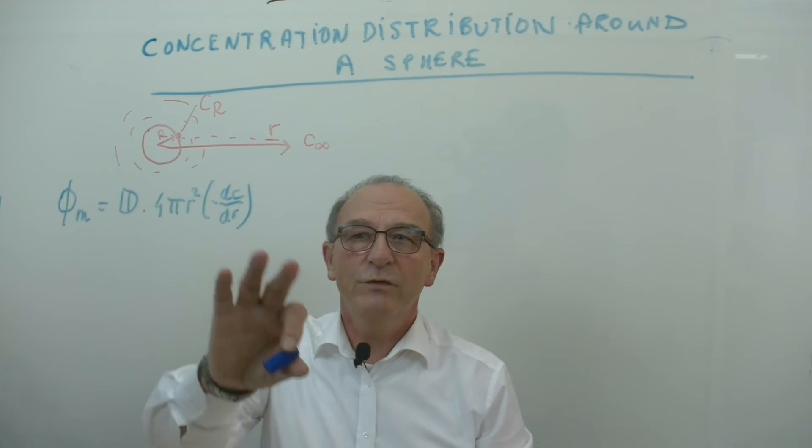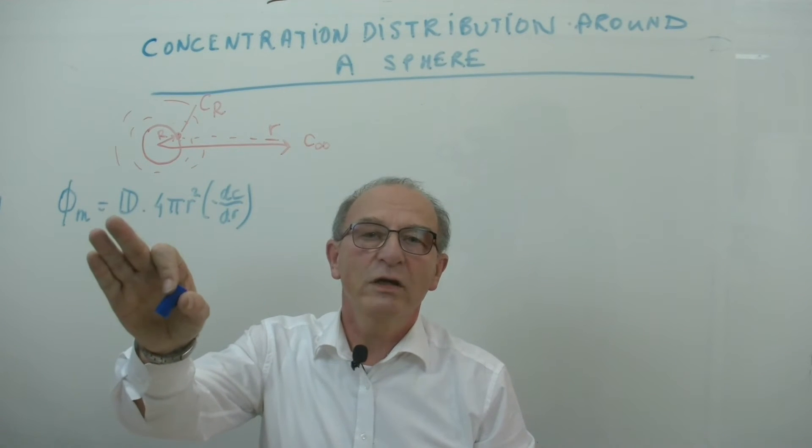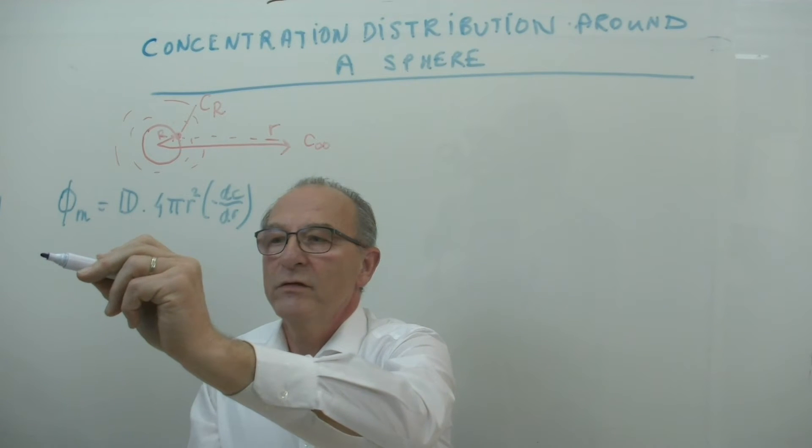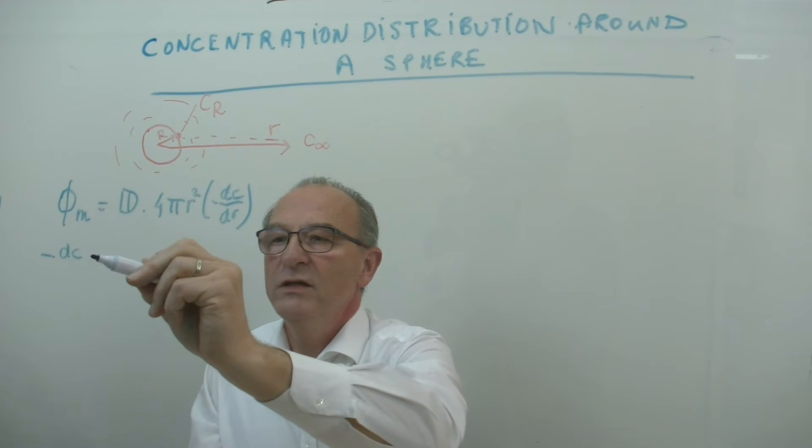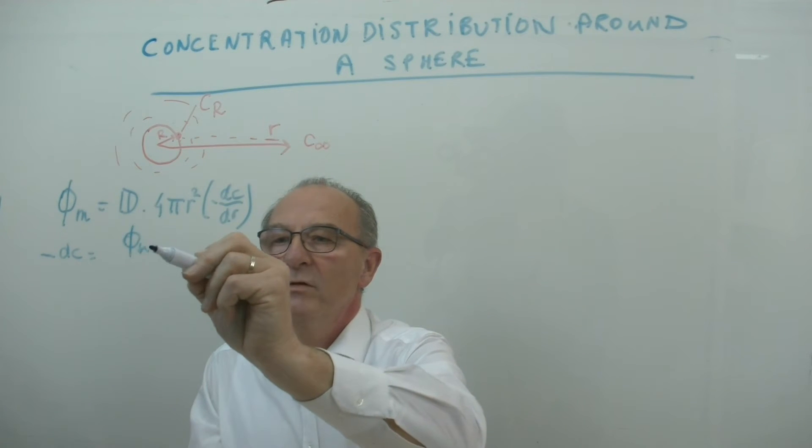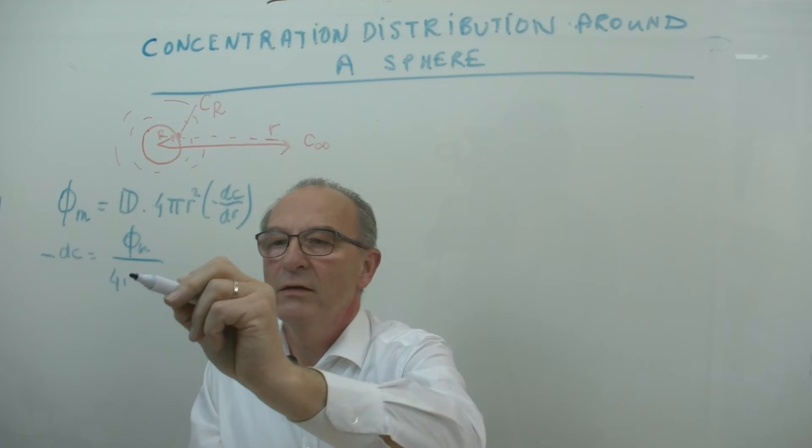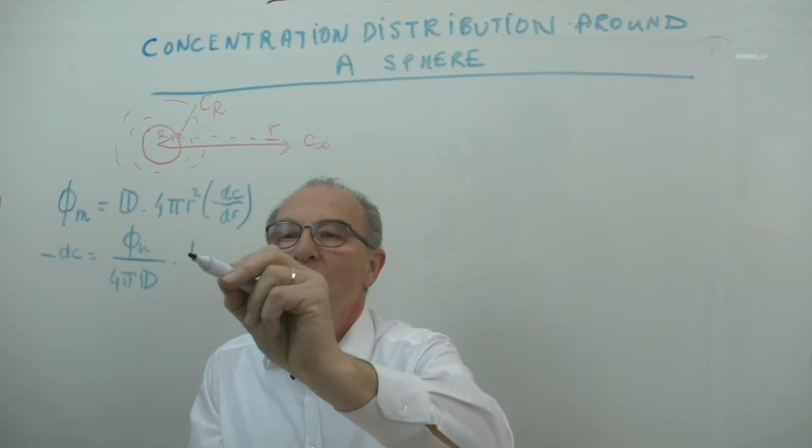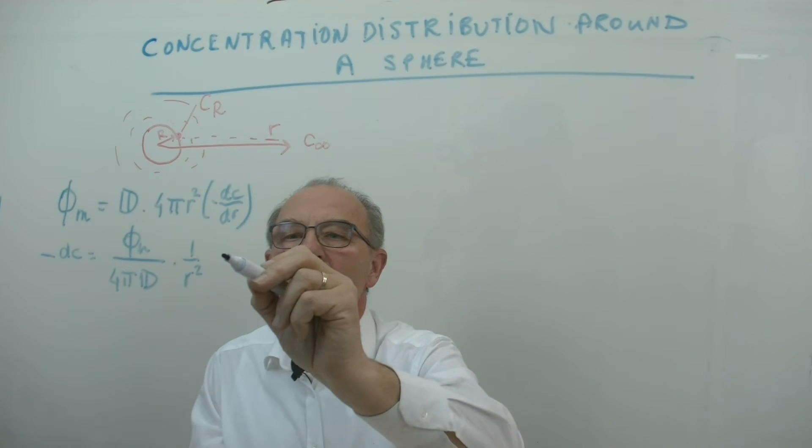In fact we have to solve this equation assuming that the mass flow is constant. So in this case we could write down minus dc is equal to phi m divided by 4 pi multiplied by the diffusion coefficient, 1 over R squared, dr.